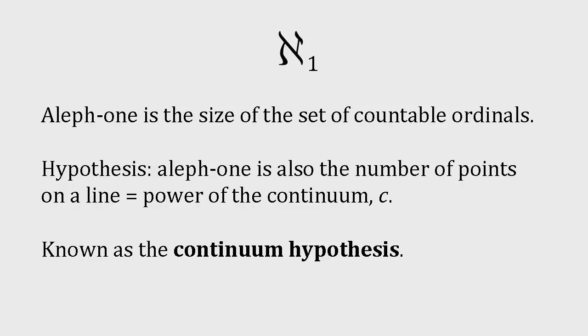This infinity of spatial points, known as the power of the continuum, C, is also the set of all real numbers. Cantor's continuum hypothesis asserts that C equals Aleph 1, which is equivalent to saying that there's no infinite set with a cardinality between that of the natural numbers and that of the real numbers. Yet Cantor was never able to prove or disprove his continuum hypothesis.